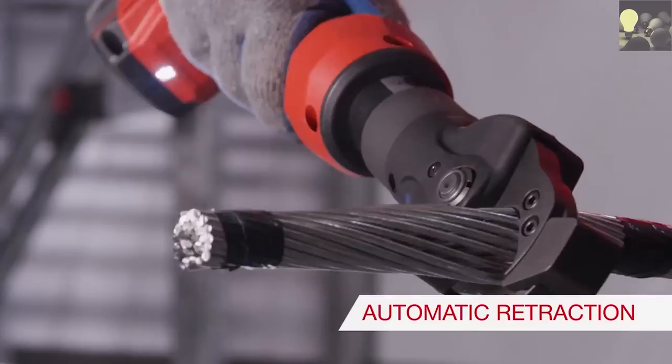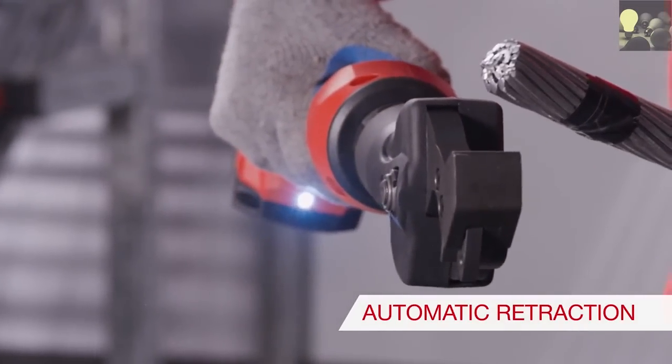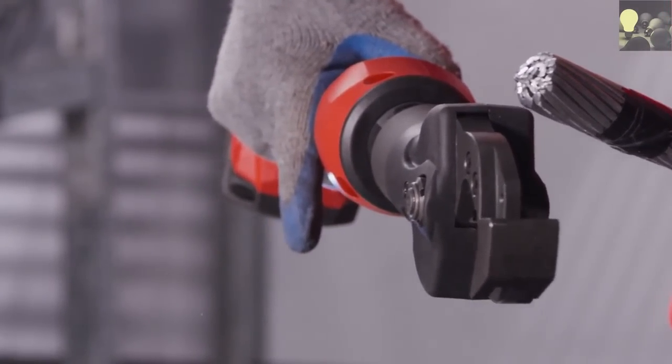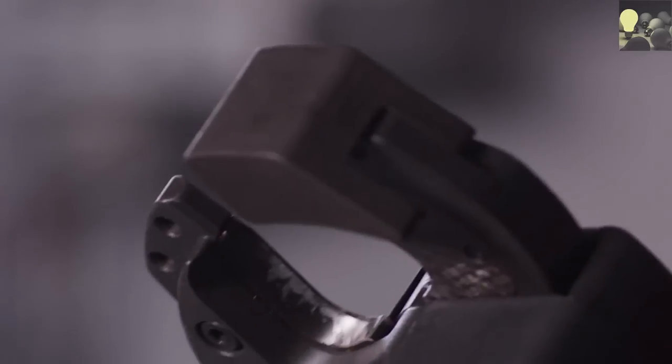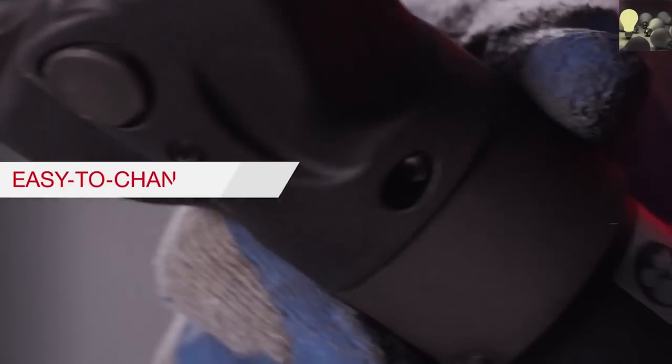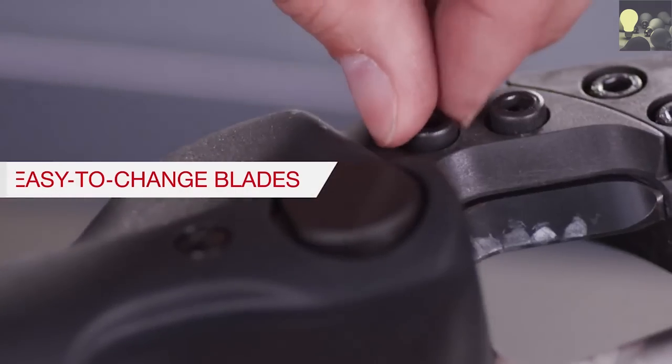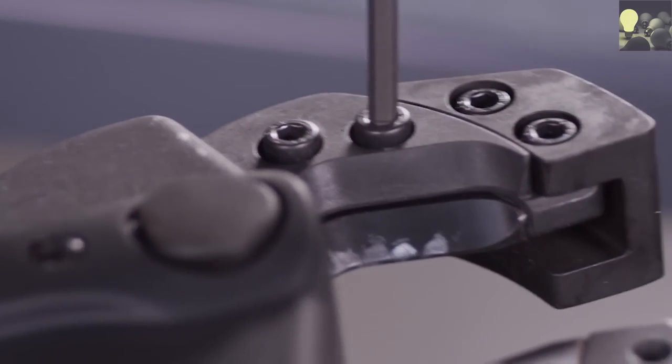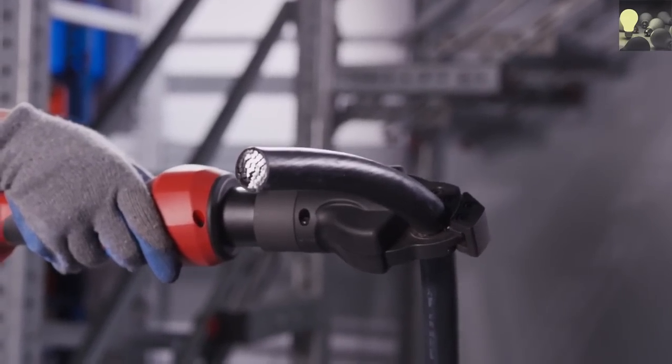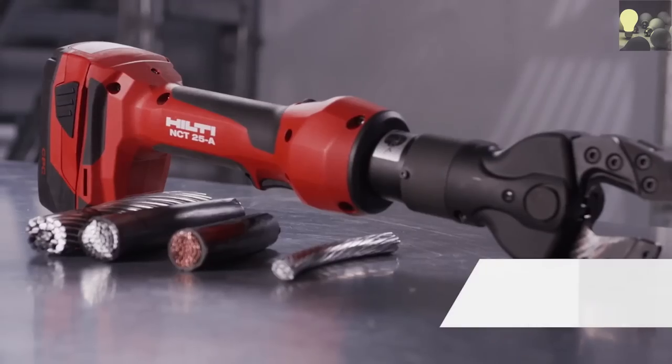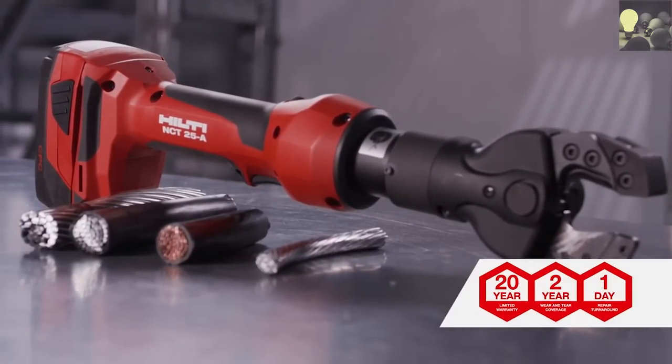It senses when the cut is complete, retracting the jaws automatically. That makes operation easy, especially if you're wearing insulated rubber gloves with leather protection. Dull blades are simple to change in the field. The NCT is built to perform, cut after cut, and is backed by our industry-leading Hilti 22-in-1 tool warranty.